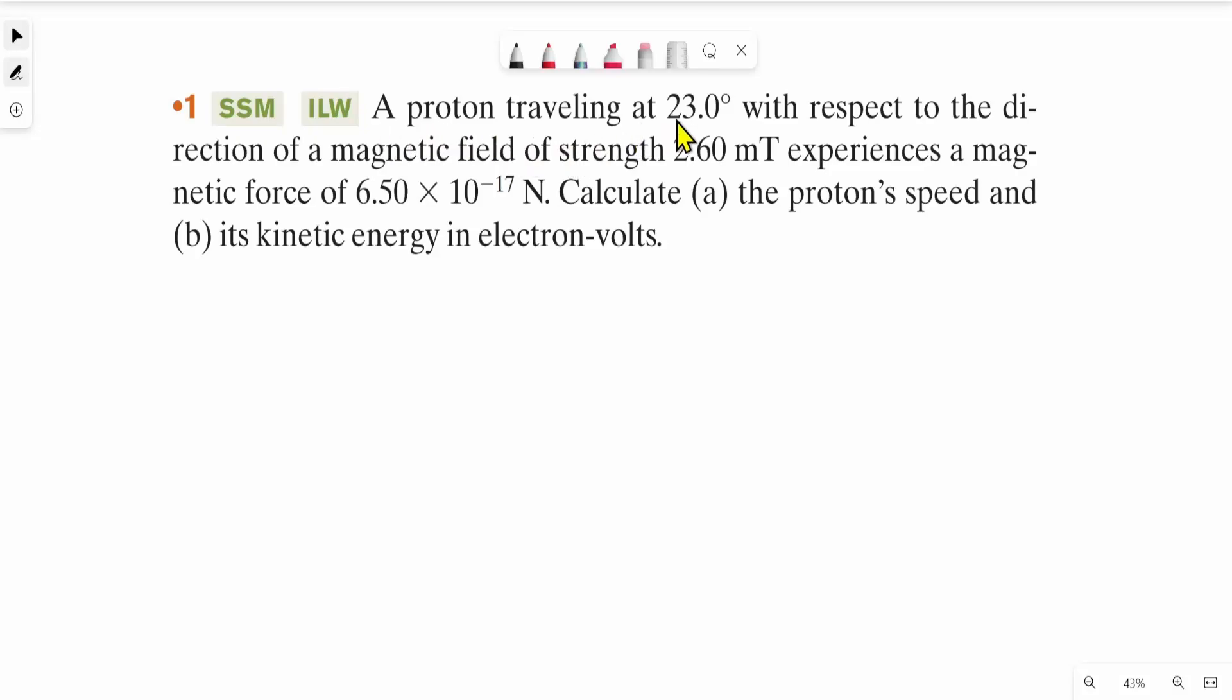A proton traveling at 23.0 degrees with respect to the direction of a magnetic field of strength 2.60 millitesla experiences a magnetic force of 6.50 into 10 to the power minus 17 Newton. Calculate the proton's speed and its kinetic energy in electron volts.